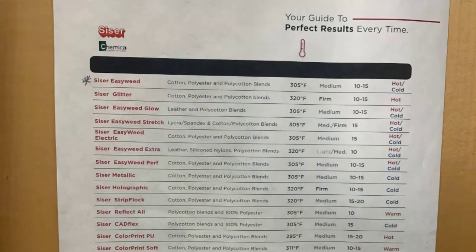There is a sign in the Fab Lab hanging next to the heat press. This is from a company called Siser where we purchase our iron-on vinyl that we sell here in Ignite. The sign is a list of suggested temperatures and times for pressing.